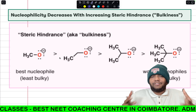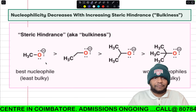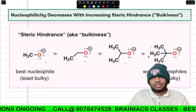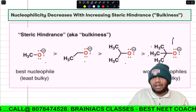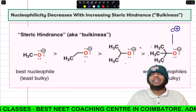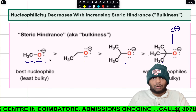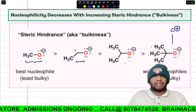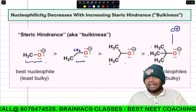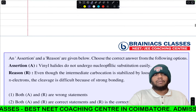For steric hindrance: a bulkier nucleophile has more difficulty approaching the substrate. For example, methoxide ion has greater nucleophilicity than ethoxide ion, which in turn is greater than tert-butoxide ion, because as the number of CH₂ or CH₃ units increases, bulkiness increases and nucleophilicity decreases.